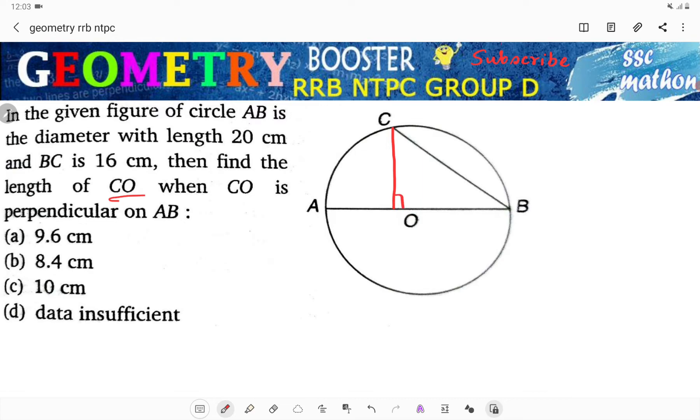It is very simple. AB is 20 centimeters, BC is 16 centimeters. First, why is angle ACB 90 degrees? Because it is a semicircle angle, it is 90 degrees. Is it clear?